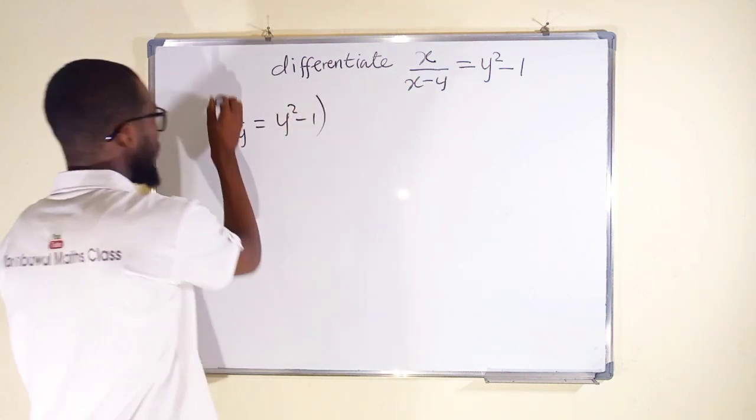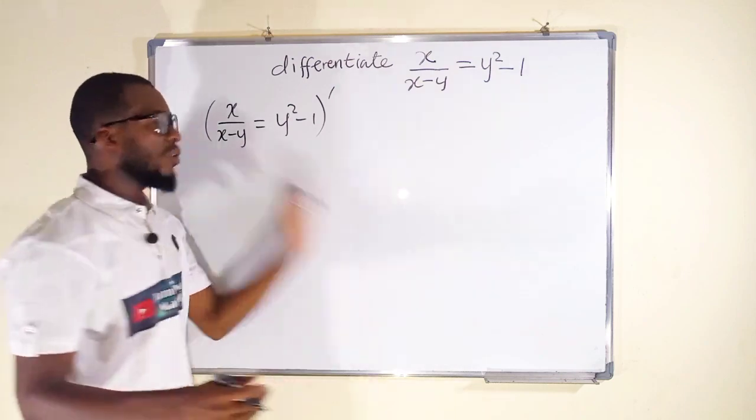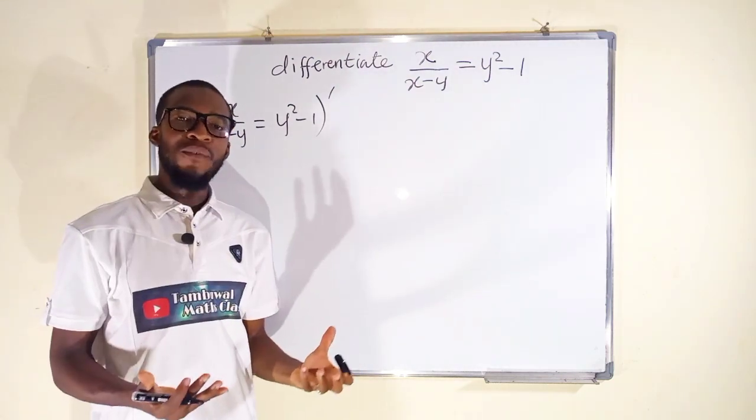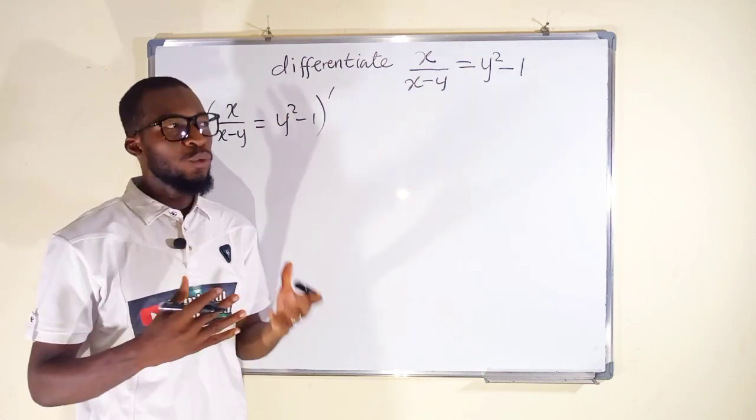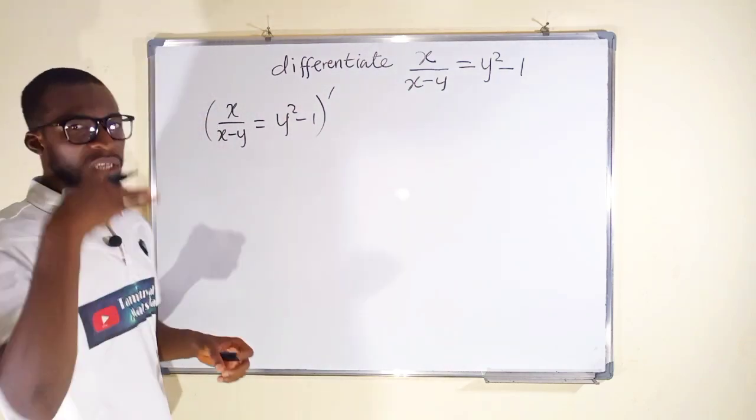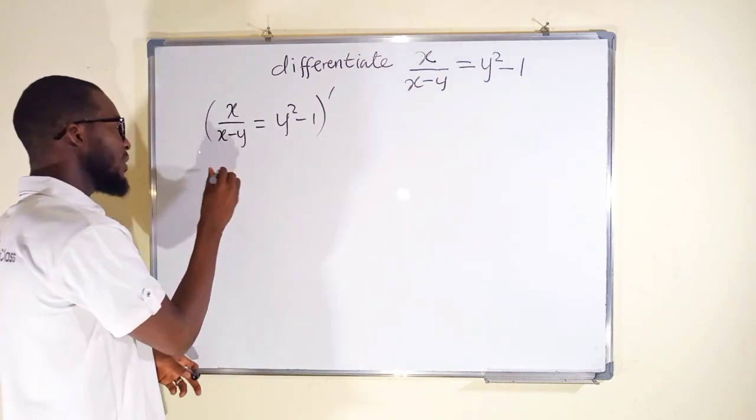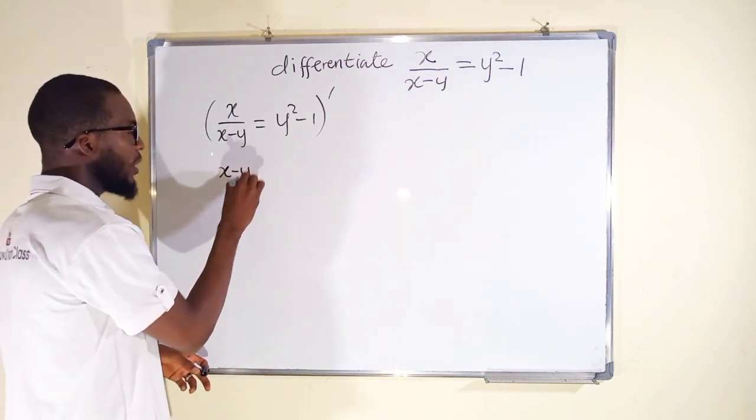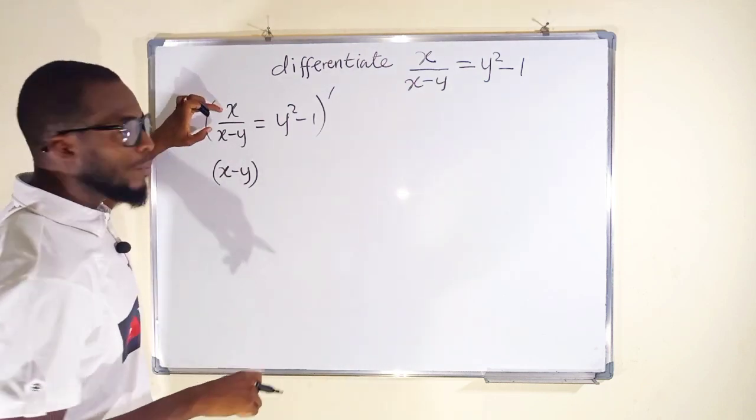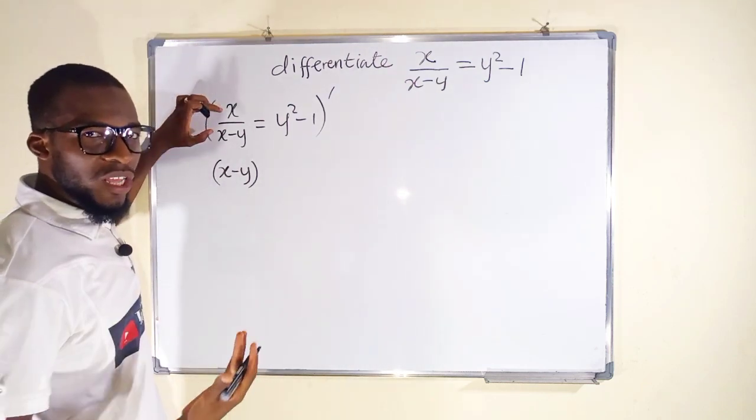From the left we have a fraction and therefore we are going to apply quotient rule. Quotient rule says you keep the bottom constant, and the bottom is x minus y. You multiply by the derivative of the top. The top is x, differentiating x you get 1.